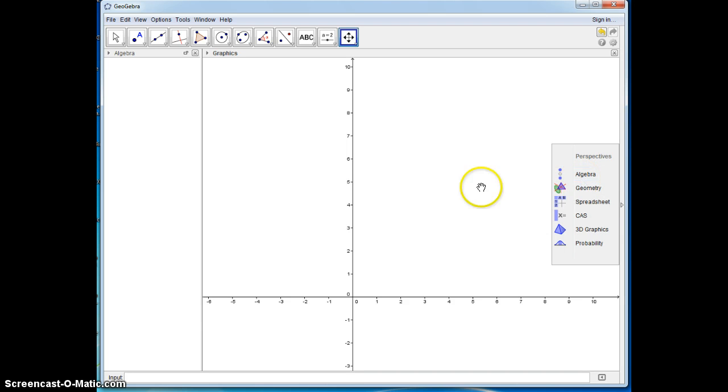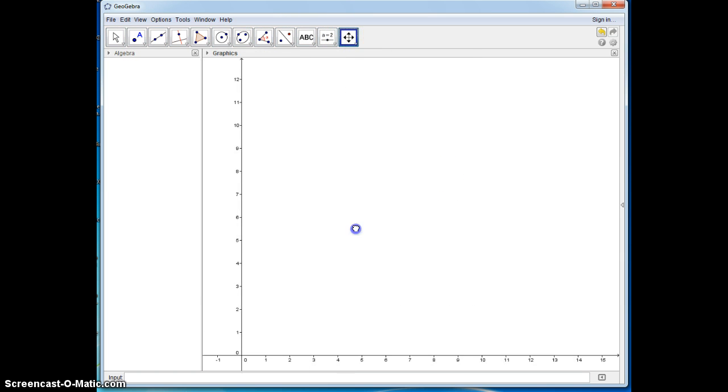I'm in the algebra view because I just want to be able to have this data over here. I could have used the geometry, but I chose algebra. So I'm going to use my move graphics view. These are my icons that I work with. I'm going to just move my axes over.